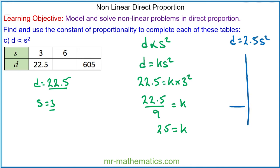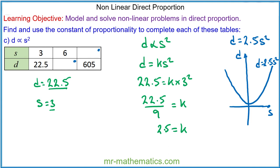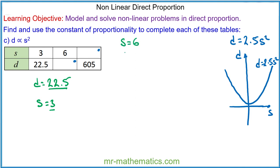Graphically, we again have a parabola with our s values on the horizontal axis and d values on the vertical axis, with the equation d is equal to 2.5s squared. We're going to use our model to find d when s is 6 and to find s when d is 605. When s is equal to 6, d is equal to 2.5 times 36, so d is equal to 90.